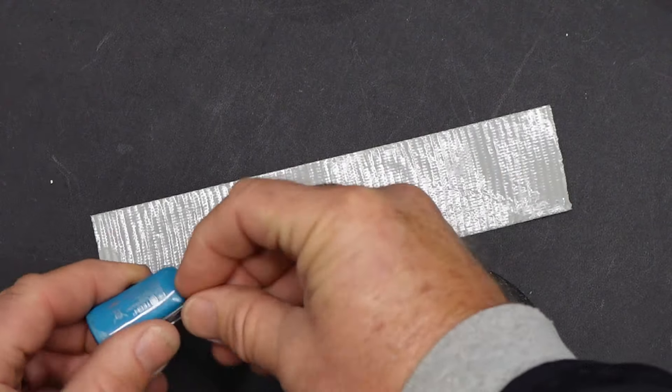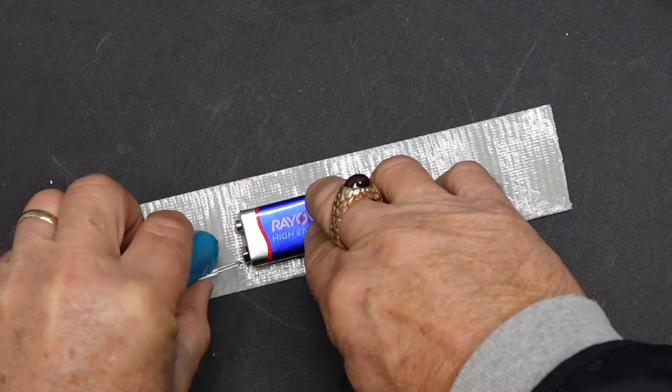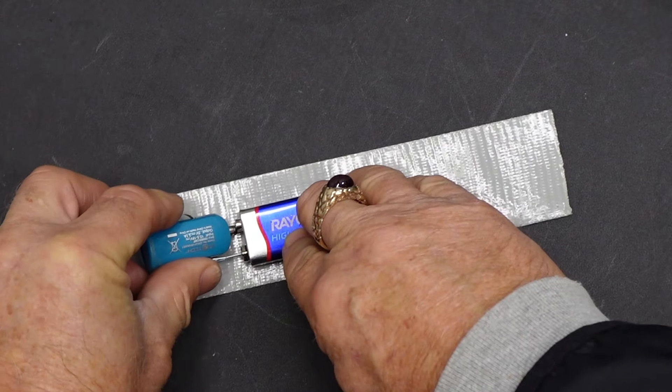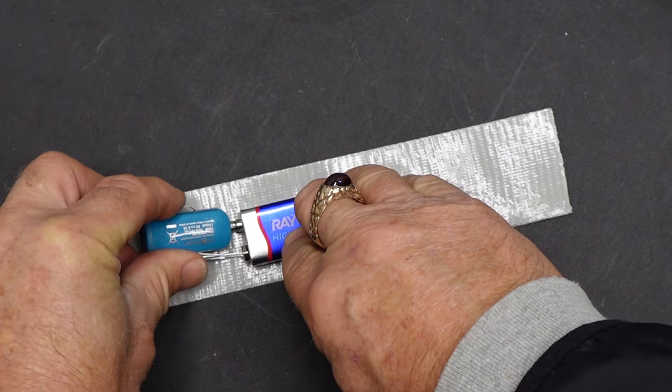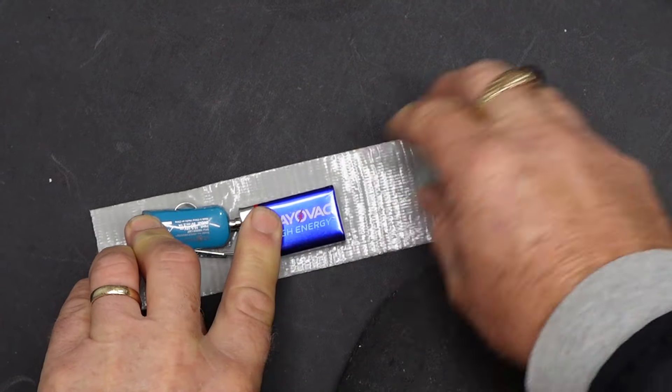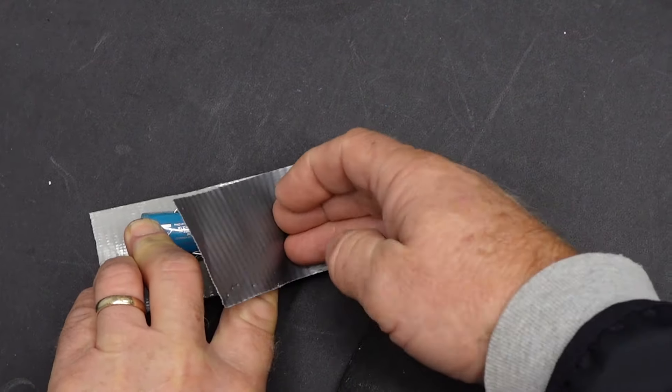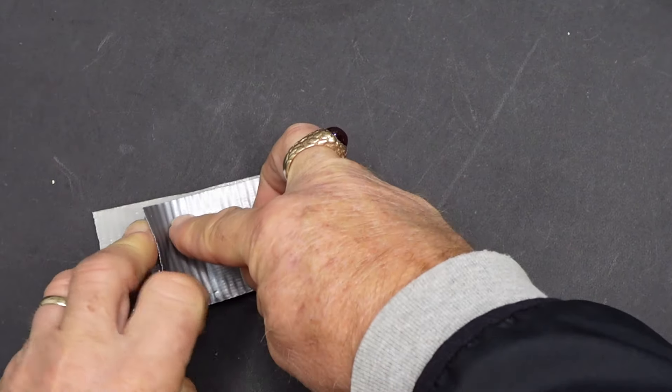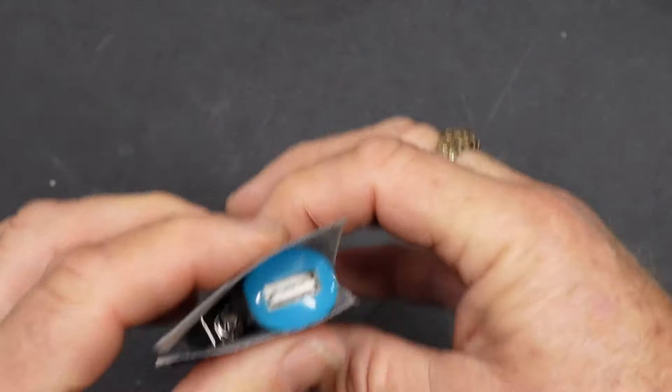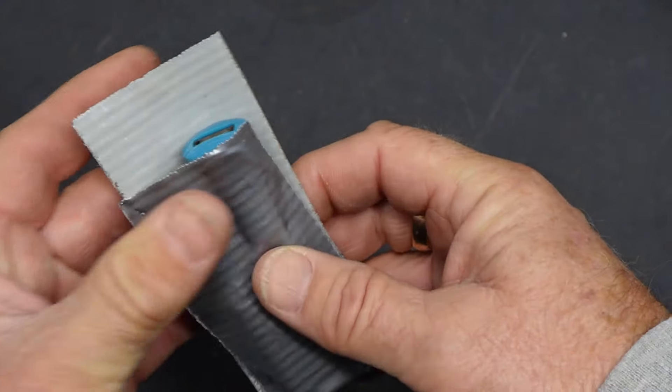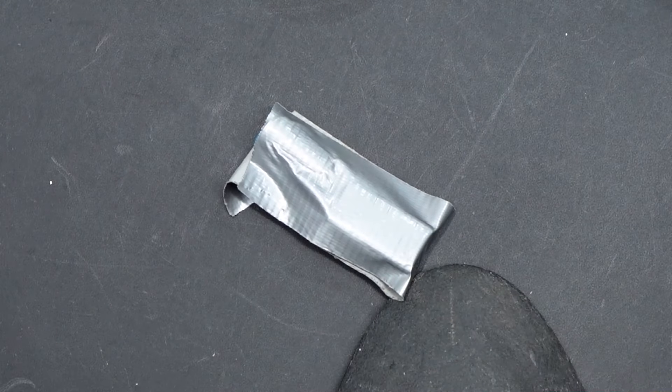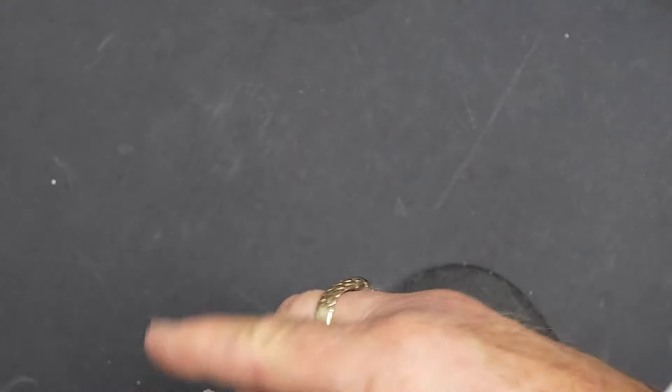Then you want to get your negative paper clip on the negative post and your positive. Compress the spring a little bit, stick it down. There you got the hands-free version. You can stick that in your pocket. Just make sure we got good contact.